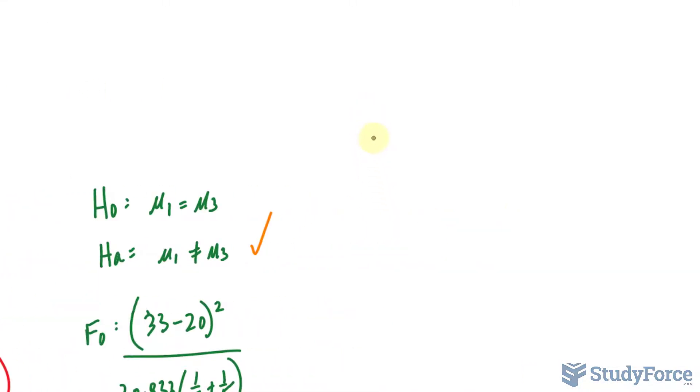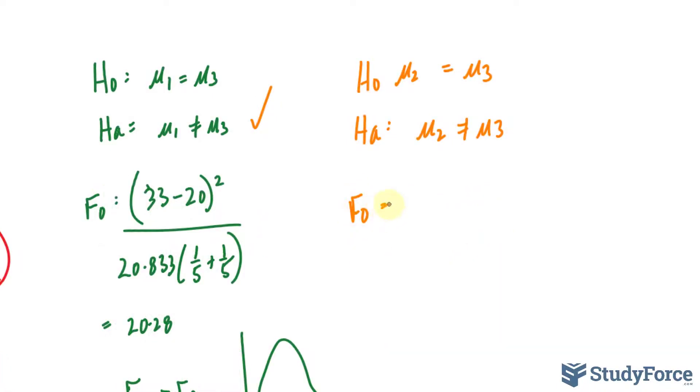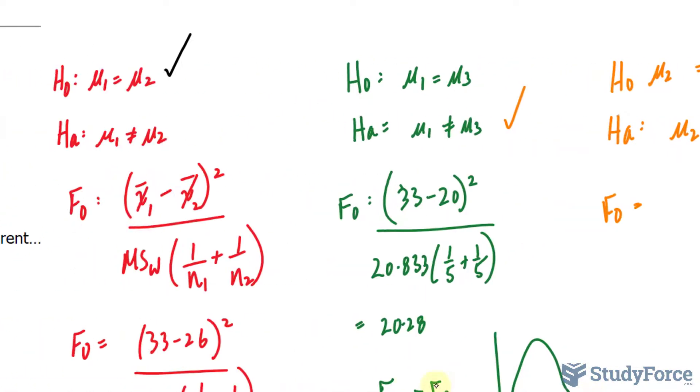I'll do this one more time now, and we'll be comparing group 2 with group 3. So its null hypothesis looks like this. Its alternative is the opposite. Its F observed, using the same formula as before except with different numbers.